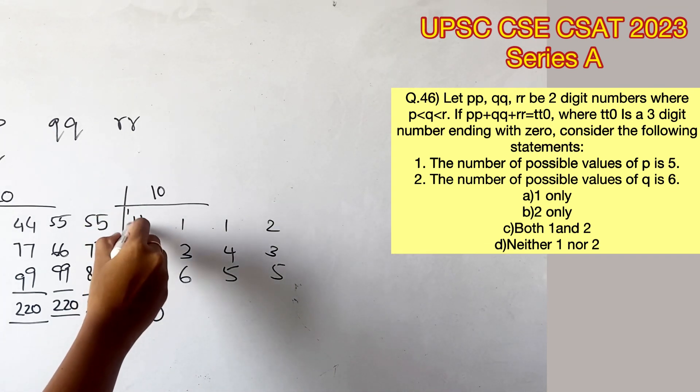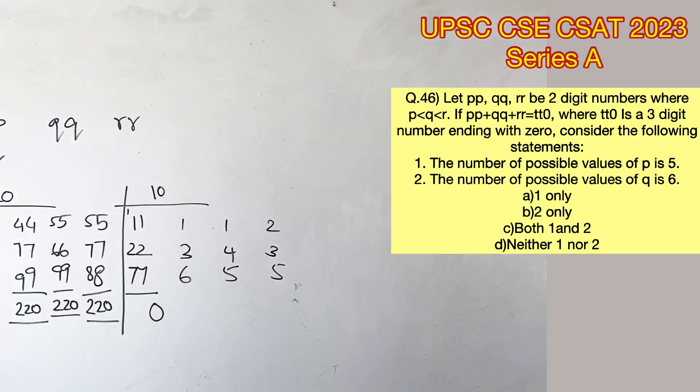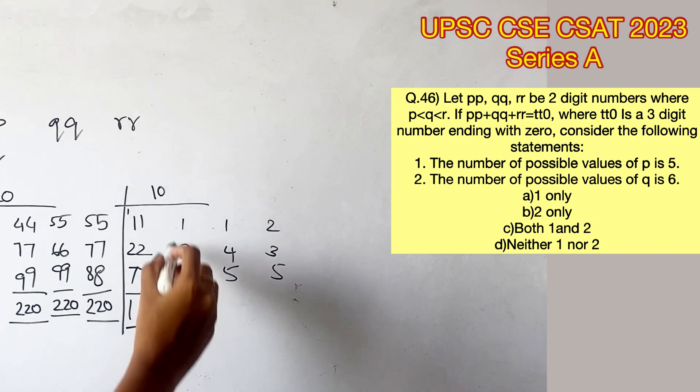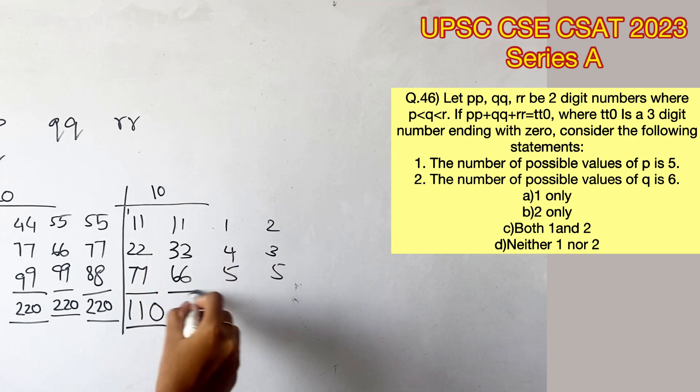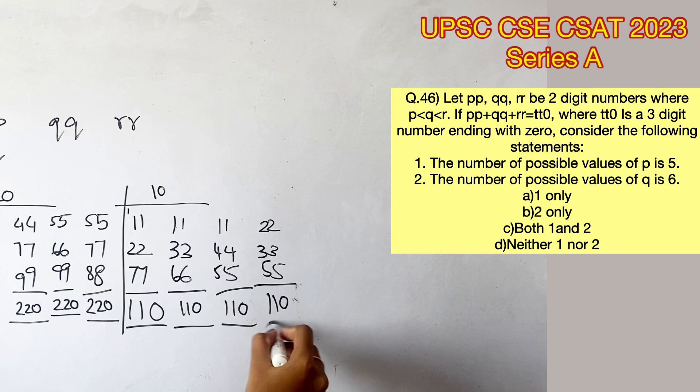The previous condition will also apply here because when you add 7, 2, and 1, you get 10 and 1 carried over. And the same digits 7, 2, and 1 are going to be added, which will provide 10. And the carried over 1 should be added to 10, which will give us 11. So this will provide us with 110 as the answer for all these cases.